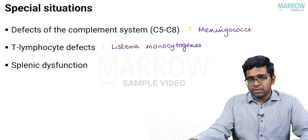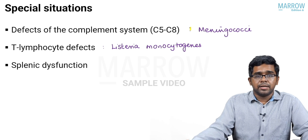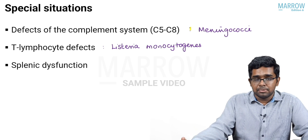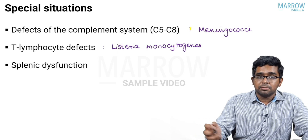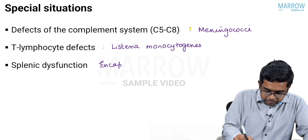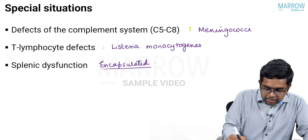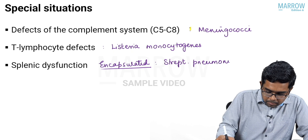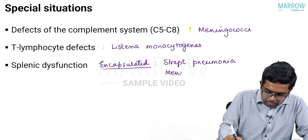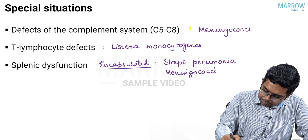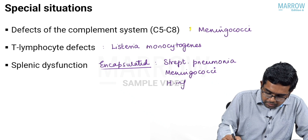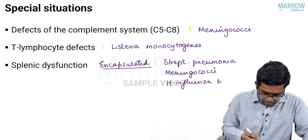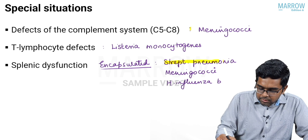If the child has splenic dysfunction — due to chronic hemolytic anemia like sickle cell disease, or conditions like asplenia where there is absence of spleen by birth — they are at high risk of infection by encapsulated bacteria: Streptococcus pneumoniae, Neisseria meningitidis, and Haemophilus influenzae type B. The commonest among these is Streptococcus pneumoniae.